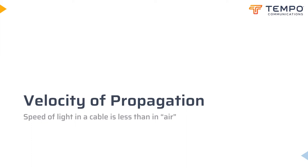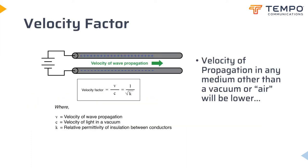If the insulating material is something other than air or a vacuum — both pretty much the same — both the characteristic impedance and the propagation velocity will be affected. The ratio of a transmission line's true velocity of propagation to the speed of light in a vacuum is referred to as the velocity of propagation factor, VP or VOP. VOP is purely a factor of the insulating material's relative permittivity or dielectric constant, defined as the ratio of the material's electric permittivity to that of a vacuum. The factor can be calculated using VP = 1/√εr.